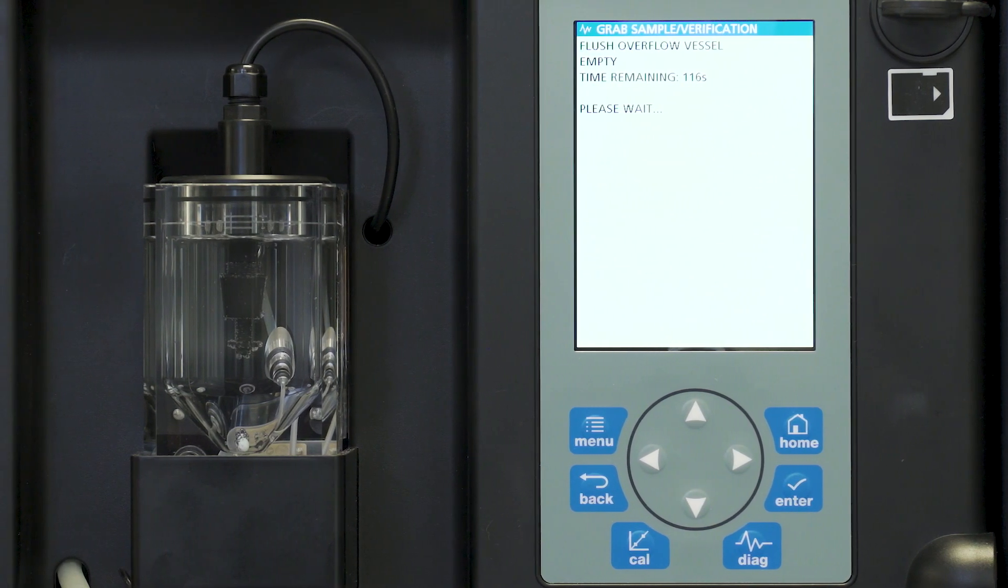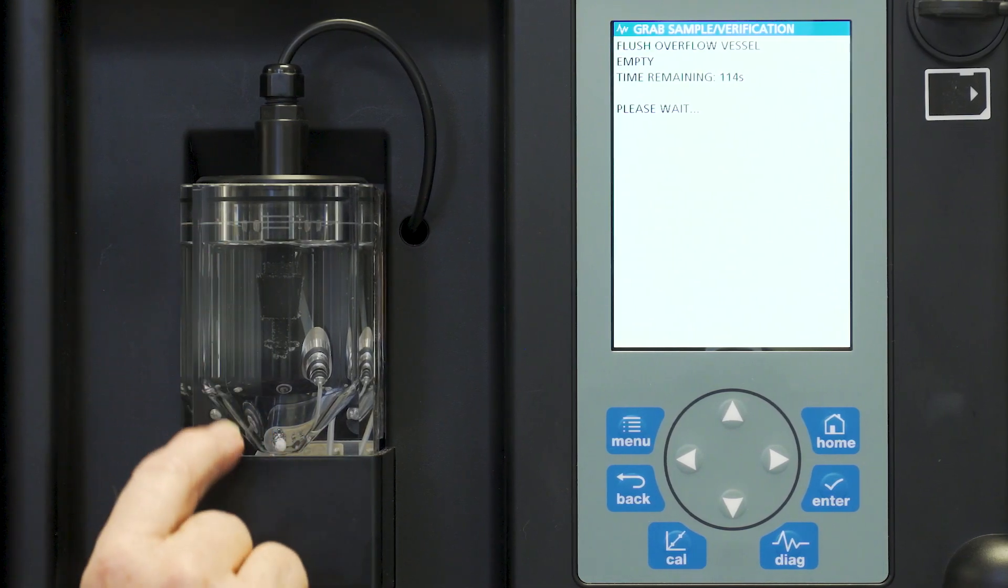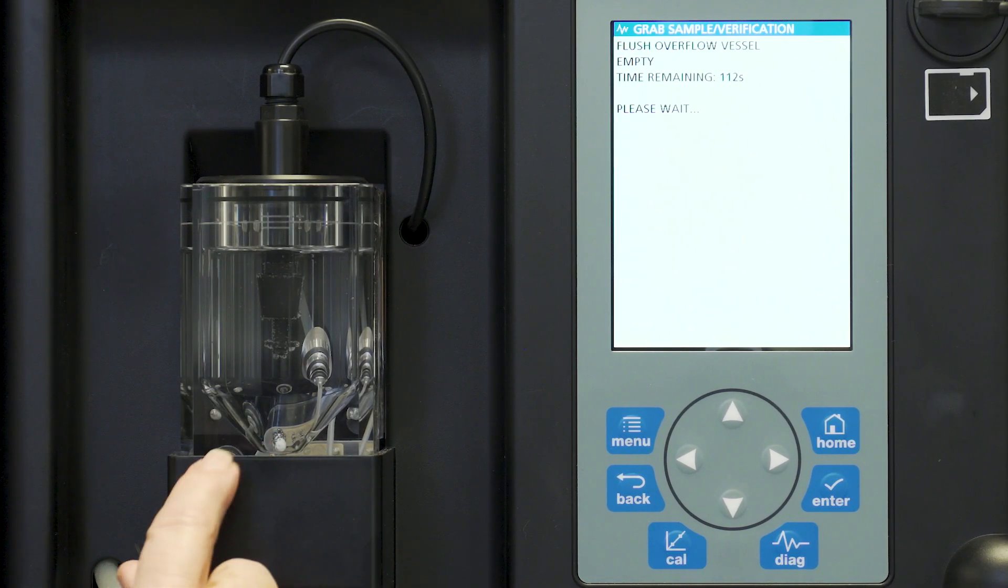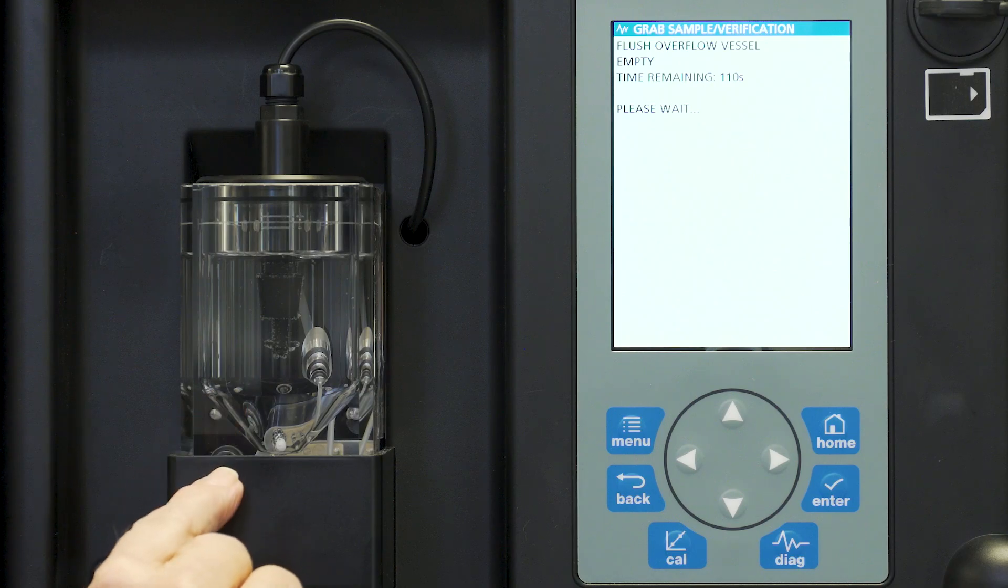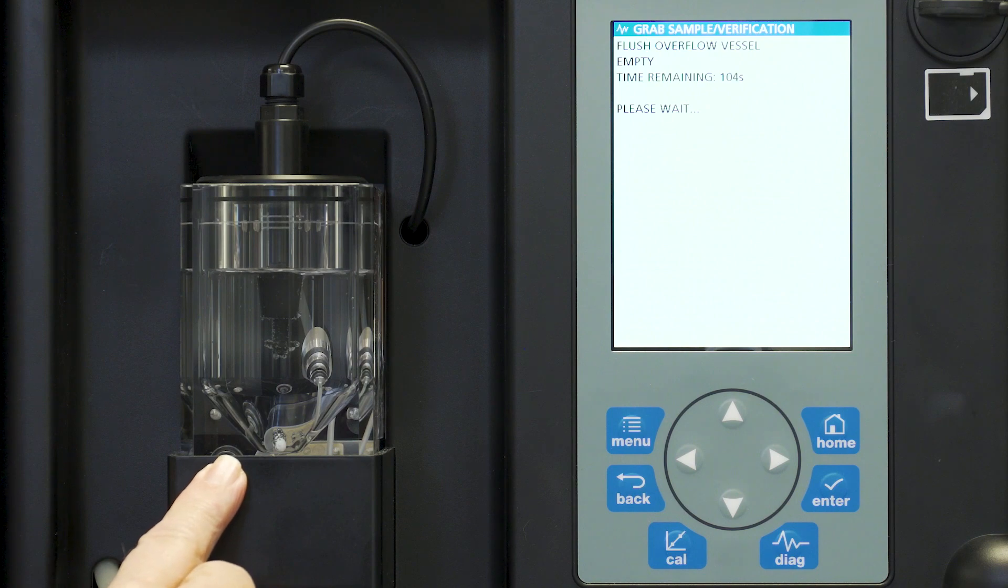What is happening right now is that we're flushing the overflow cell with our current sample. It's going to go through a complete flush here, refill, and do another flush. At that point in time we will go directly to adding our grab sample.